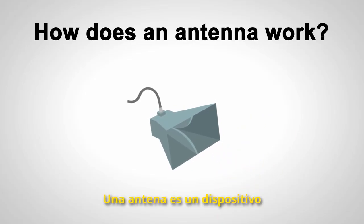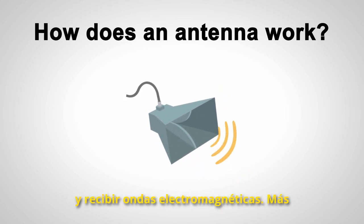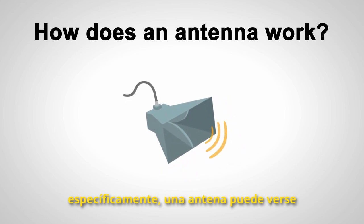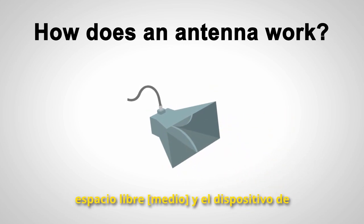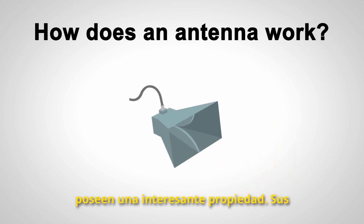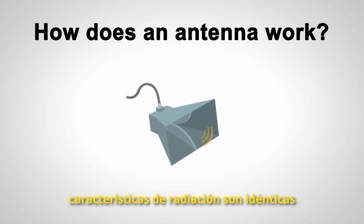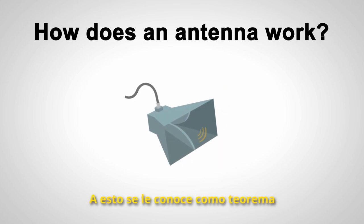An antenna is a metallo-electric device that transmits and receives electromagnetic waves. More specifically, an antenna can be seen as a transitional structure between free space and a guiding device, as illustrated in the figure. Conventional antennas possess an interesting property: their radiation characteristics are identical when transmitting and receiving electromagnetic waves. This is known as the reciprocity theorem.